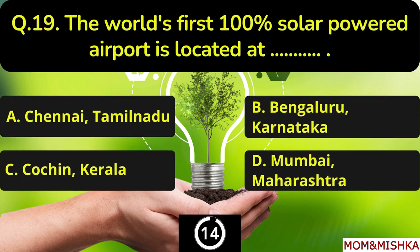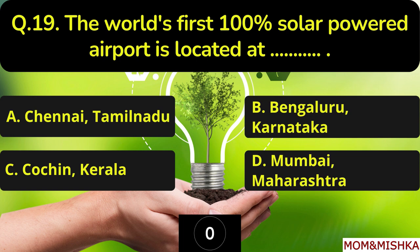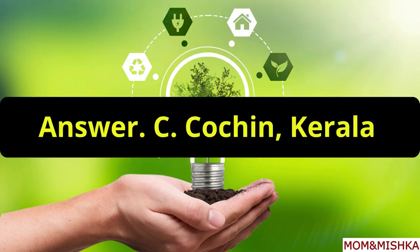The first 100% solar-powered airport is located at blank. In Cochin, Kerala, Option C.